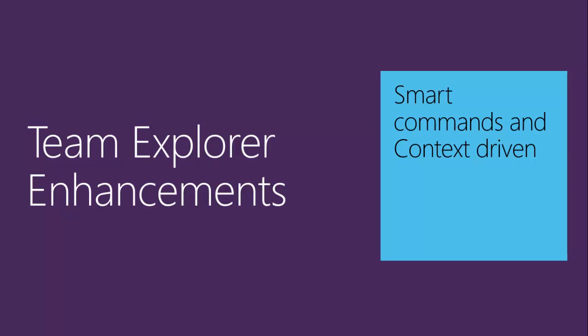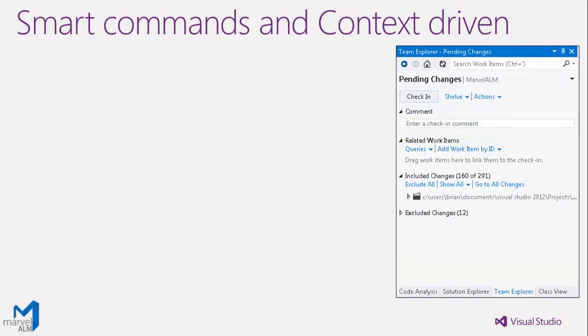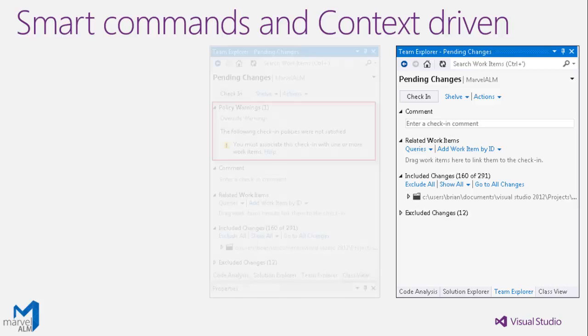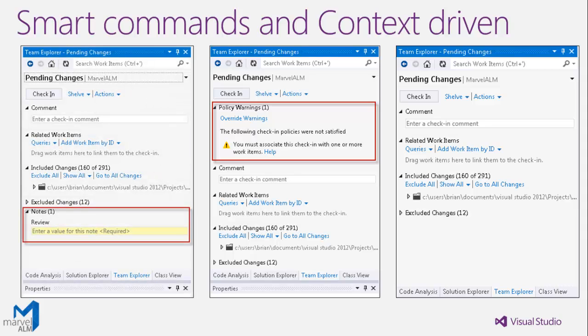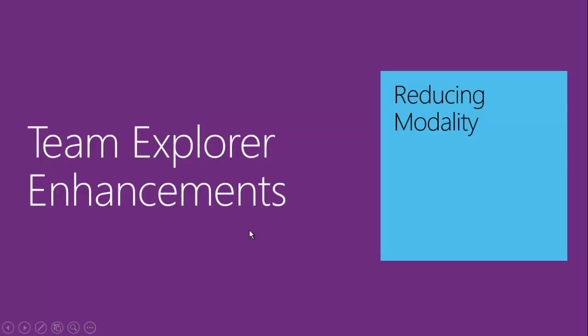Smart commands and context-driven: this is a pretty feature because it enhances the UI by reducing complexity — it does not show commands and sections that are not needed at the moment. For example, the check-in policy will not show unless there is a violation. The associated work items section will only show if there is a violation of it. The check-in notes are very smart — they just show what is really needed.